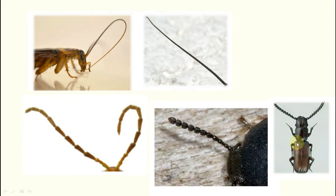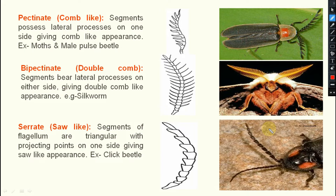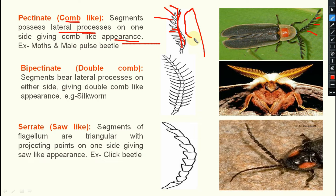Next one is pectinate — pectinate means comb-like, just like a comb we use at home. Segments possess lateral processes on one side, giving a comb-like appearance. This is present in case of moths and male jewel beetles. That is your pectinate or comb-like type.